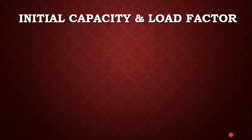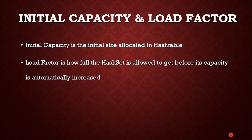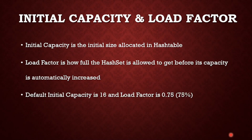Now let's discuss two important concepts: initial capacity and load factor. Initial capacity is the initial size allocated in the hash table for a HashSet. Load factor is how full the HashSet is allowed to get before its capacity is automatically increased. When the structure is about to get full, its size is automatically increased based on the load factor. The load factor is essentially a percentage of the existing size — for example, 0.6 means when 60% is filled, a new larger hash table is created and all elements are copied there.